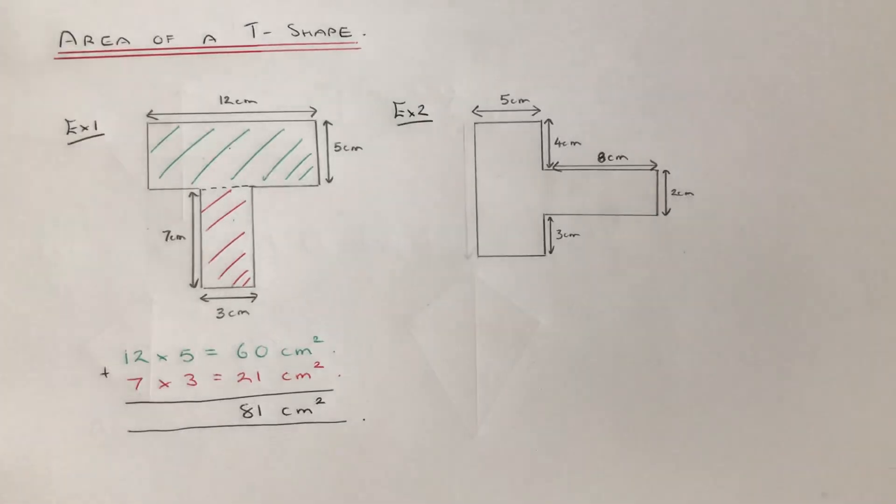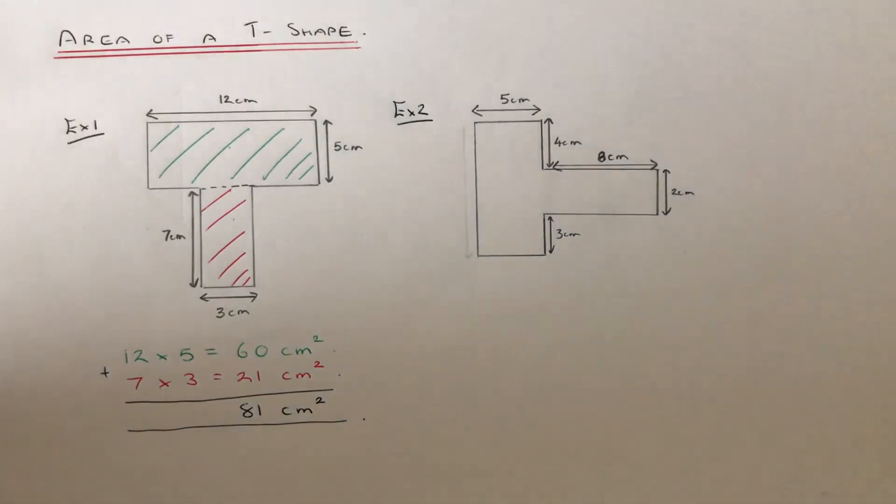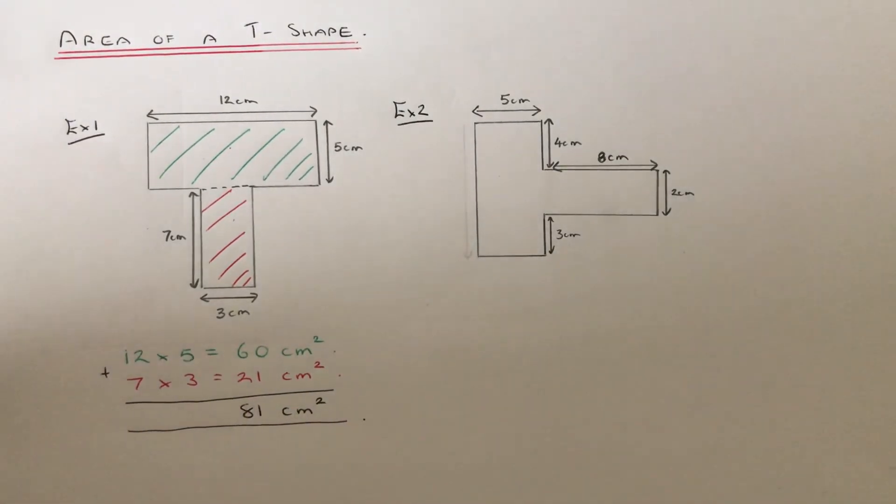So let's move on to example 2 then. So this one's a little bit trickier because we haven't got all the measurements that we need on our T-shape.